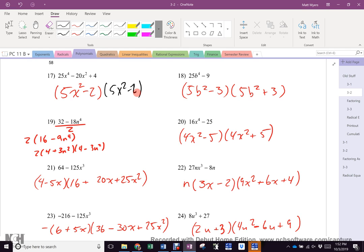21? Okay. So 21, that's a cube, right? And that's a cube, right? So that's my x, that's my y, and it's different. So we start with the cube root of the first one, 4, minus the cube root of the second one, 5x squared. Then I take the x and I square it, 16. Since it's a difference of cubes, this is plus 20x squared. And then plus 25x. Sorry, I did that wrong. 5x there and 25x squared there.